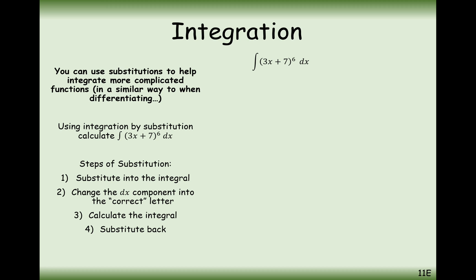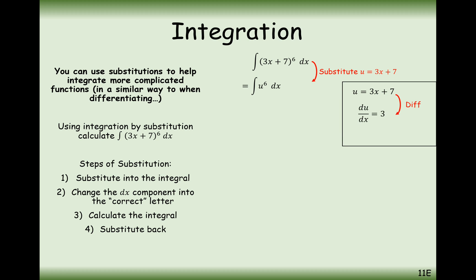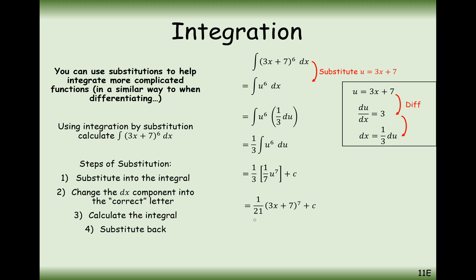What do we suspect the substitution might be here? Previously we replaced the inside of the square root with u, and we're going to do pretty much exactly the same here — set u equal to the inside of this power of 6. So we use the substitution u equals 3x plus 7. We take our substitution, differentiate it and rearrange it to get dx equals a third du. We replace dx with a third du and factorise the third to the front. Now we can do the integration: u to the power of 7 divided by 7, times a third. Expanding the brackets and replacing u with 3x plus 7, the answer is 1 over 21 times (3x plus 7) to the power of 7, plus c.